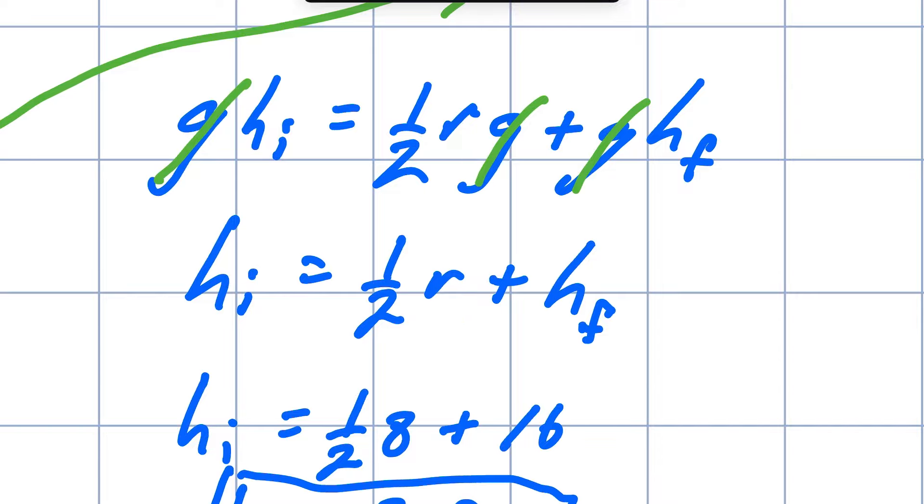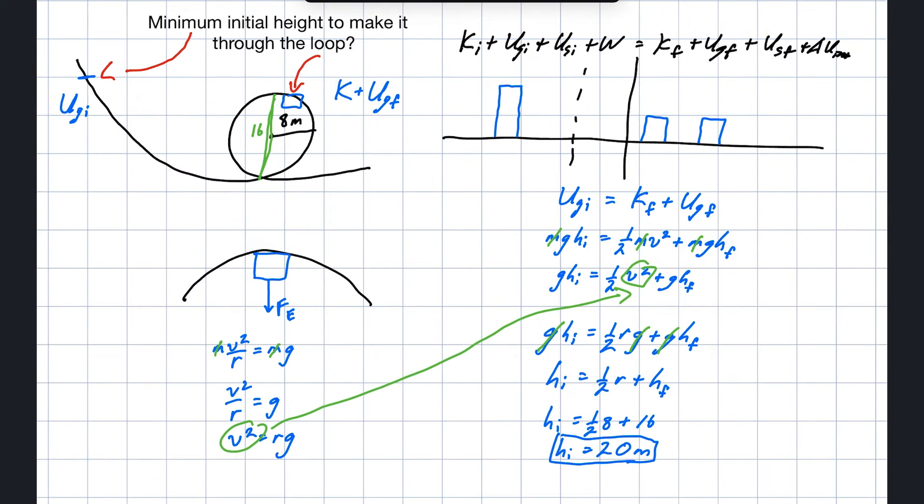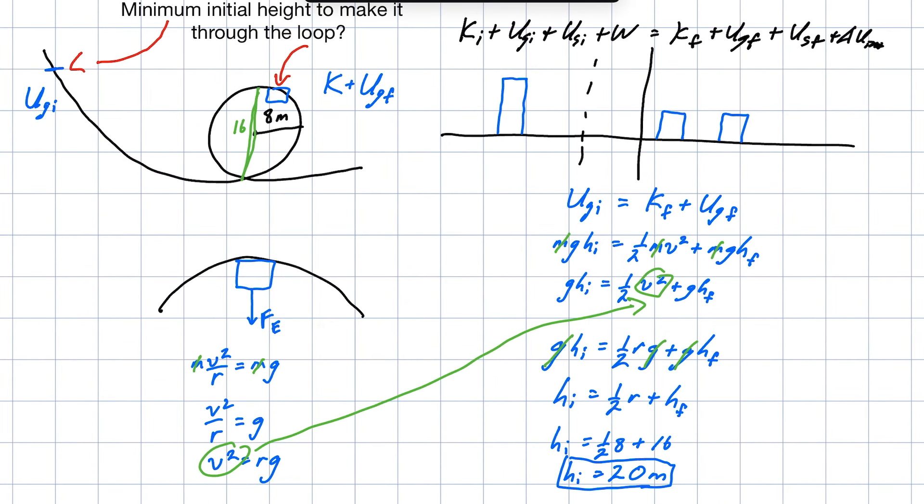All right now what happened here? How did we do this? Well we did the energy analysis, the initial and the final state, and then we did a force analysis so we could find an equation for V. That gets substituted in and then I plug in my values and it ends up being pretty simple. I hope that was helpful. Thanks for watching. Don't forget to like and subscribe and I'll see you next time.